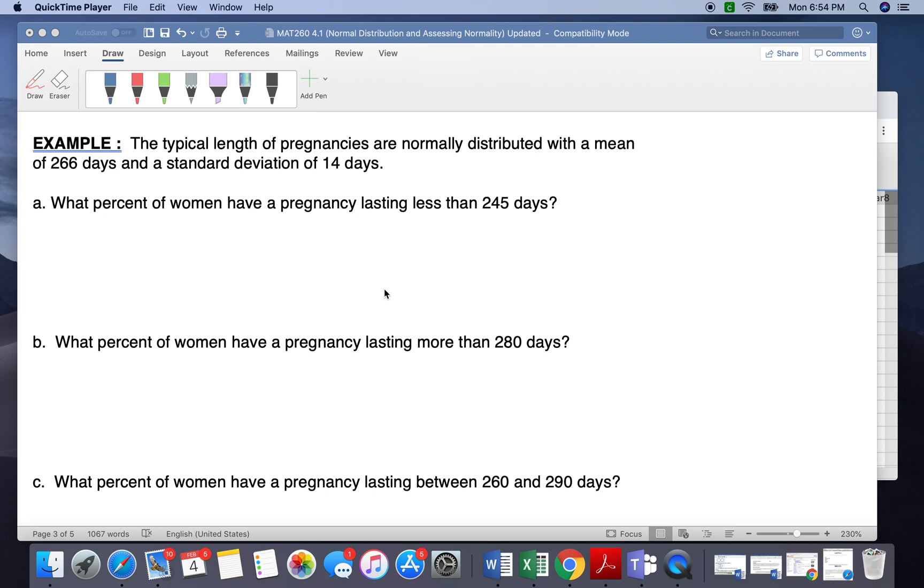We will learn how to solve problems about the normal distribution in StatCrunch. First off, we have the typical length of pregnancies are normally distributed with a mean of 266 days and a standard deviation of 14 days.